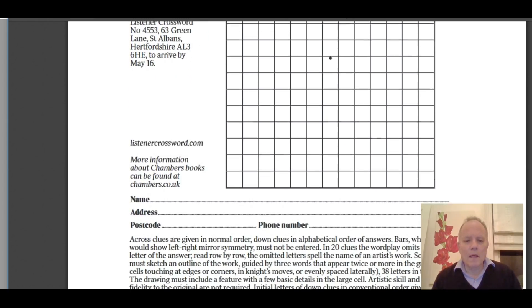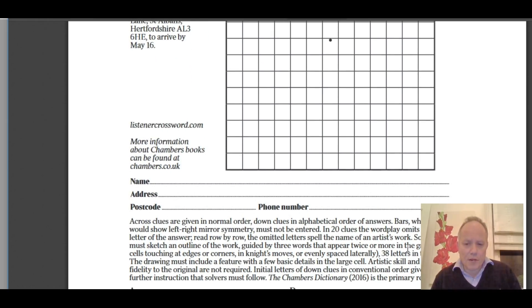The preamble mentions bars mustn't be entered. In twenty clues, the wordplay omits a letter of the answer. Read row by row, the omitted letters spell the name of an artist's work. Oh, well, art again. Solvers must sketch an outline of the work, guided by three words that appear twice or more in the grid, in cells touching at edges or corners in knight's moves or even spaced laterally. The drawing must include a feature with a few basic details in the large cell.